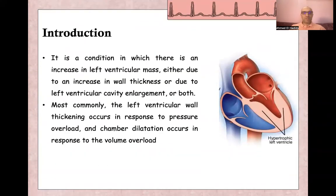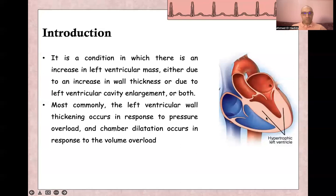Left ventricular hypertrophy is a condition in which there is an increase in left ventricular mass, either due to increase in wall thickness itself or due to left ventricular cavity enlargement. Increasing in left ventricular wall thickness is mostly due to pressure overload, and dilatation or cavity enlargement is due to volume overload.